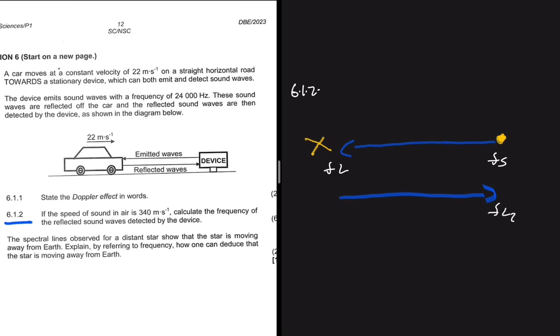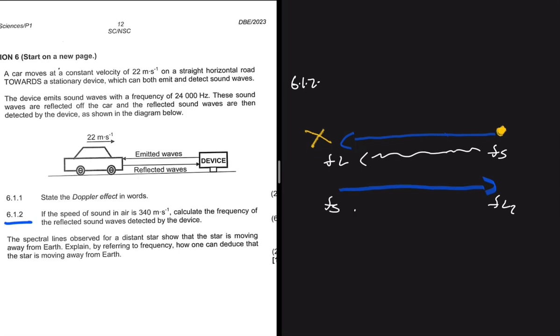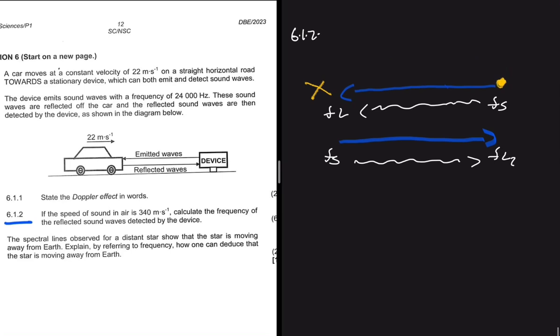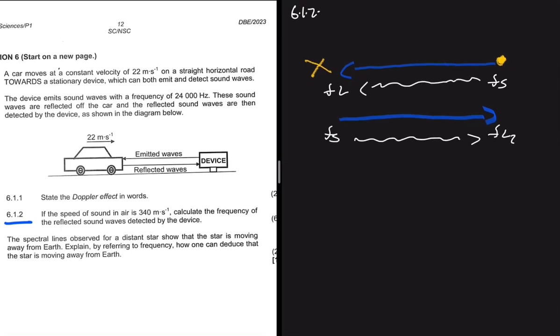Now we have this frequency being reflected back to the device, and then we have fl2. So you can use this fs to find fl, and then when you find that fl it now becomes your fs that the device is going to detect. Let me show you what's going on.